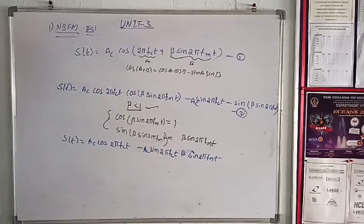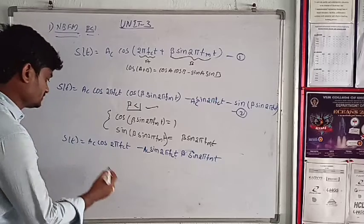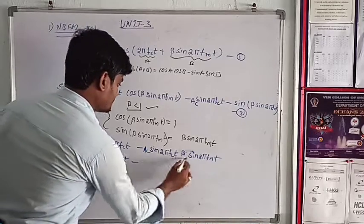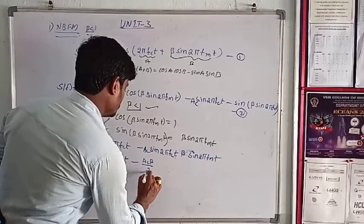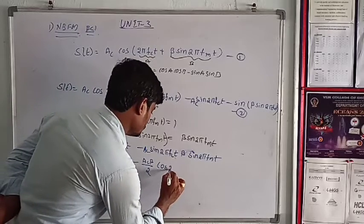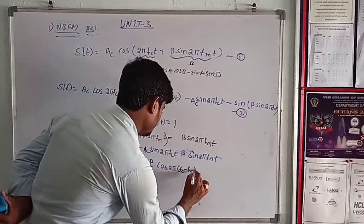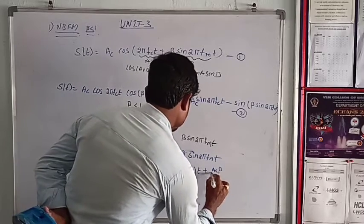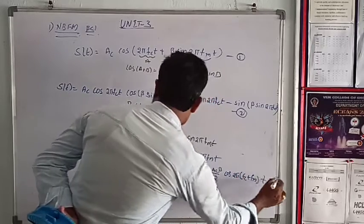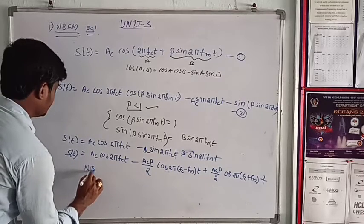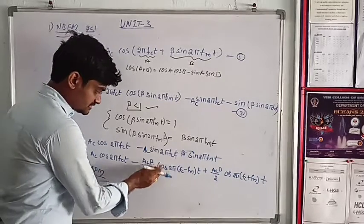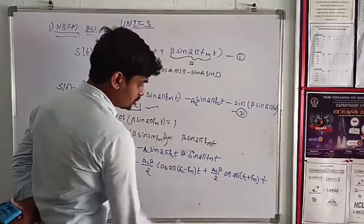Using sin A sin B equals cos A minus B minus cos A plus B by 2, we get AC cos 2 pi FC t minus AC beta by 2 cos 2 pi FC minus FM into t minus AC beta by 2 cos 2 pi FC plus FM into t. This is the narrowband FM equation.